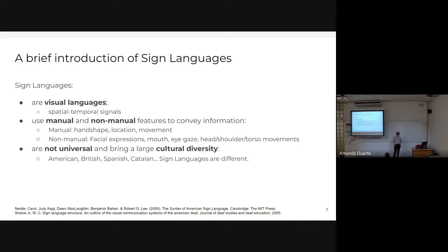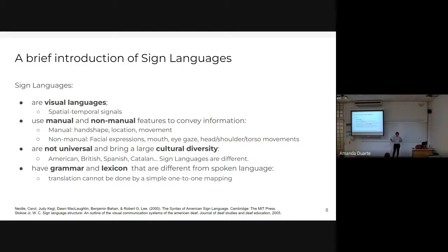Sign languages are not universal. Different countries and even different regions of the same country have developed their own language, which brings a whole culture of a community. When working with sign language it's very important to take into account that they are not just a language — they are part of the culture of a whole community. For example, American Sign Language is different from British Sign Language, and they are also different from spoken language. ASL is not a signed version of English; it has its own grammar and lexicon, so the mapping between sign language and spoken language cannot be done one-to-one.